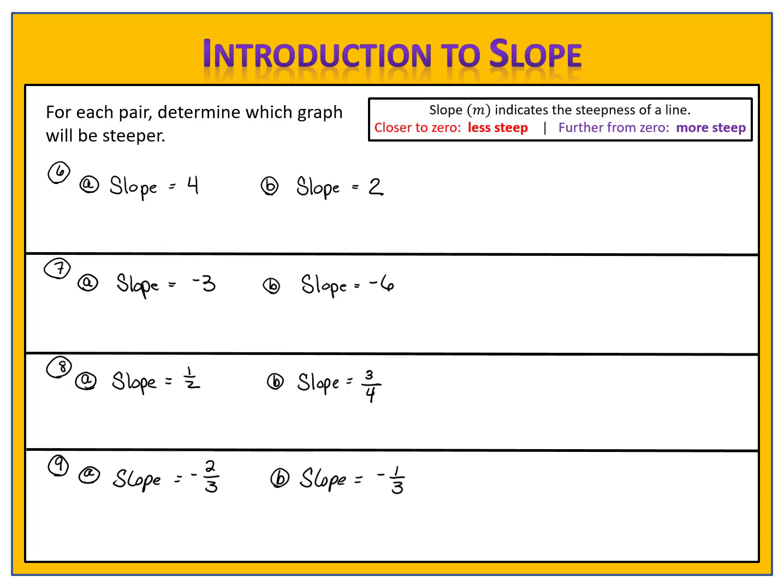Let's compare answers. In order to determine which graph will be steeper, we're looking for the slope that is furthest from zero. In exercise six, we have the choice of four or two. Four is further from zero, so the line with the slope of four will be steeper than the line with the slope of two. In exercise seven, we're comparing the slope negative three with the slope negative six. Negative six is further from zero, so the line with the slope of negative six will be steeper than the line with the slope of negative three.